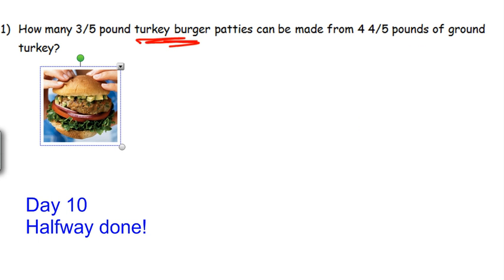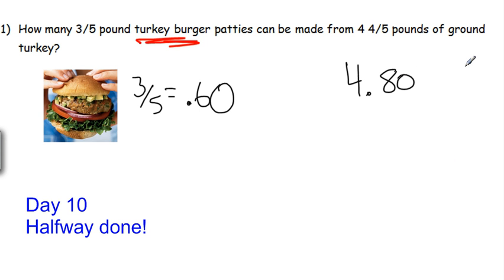How many of these three-fifths burger patties can we make from four and four-fifths pounds of ground turkey? This is fractions and I don't really want to work with fractions, so let's turn these into decimals. Three-fifths is 0.60 and four and four-fifths would be 4.80. Now, how many of these 0.60 burgers can fit into 4.80? We just need to divide.